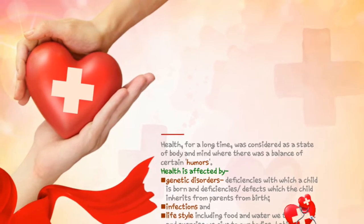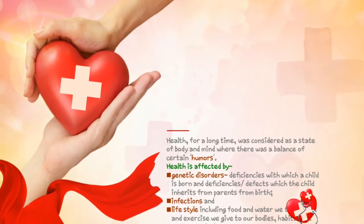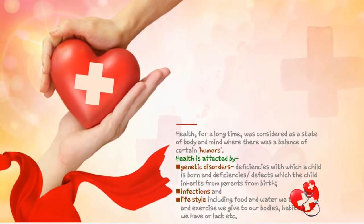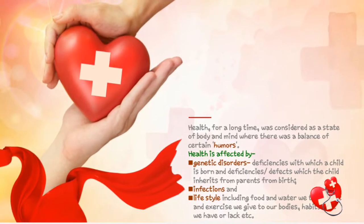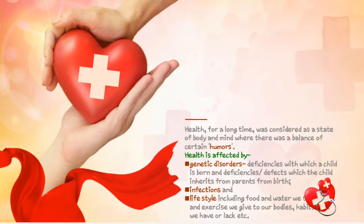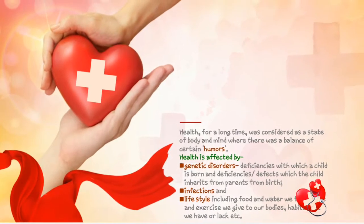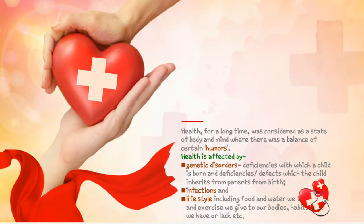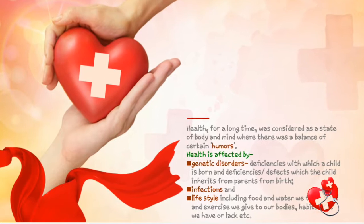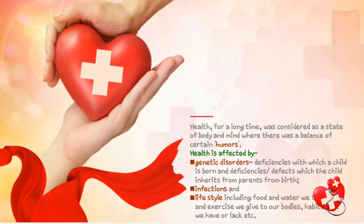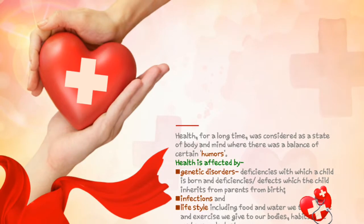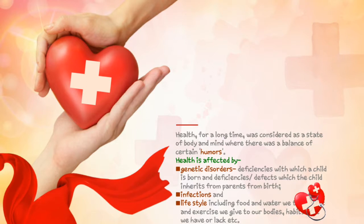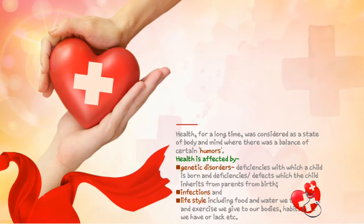First is genetic disorders. These are deficiency diseases with which a child is born, which the child inherits from parents from birth. Second is infections, which are transmitted from an infected person to a healthy person or by certain things. Third is lifestyle, which includes food and water and other things like rest, exercise, and habits of a person. For example, obesity is seen in people who eat junk food and have unhealthy eating habits.